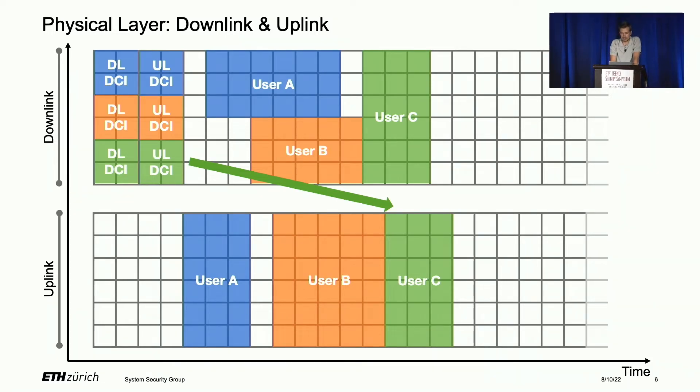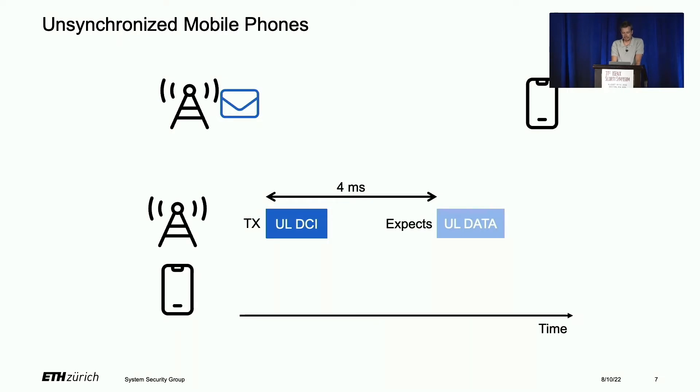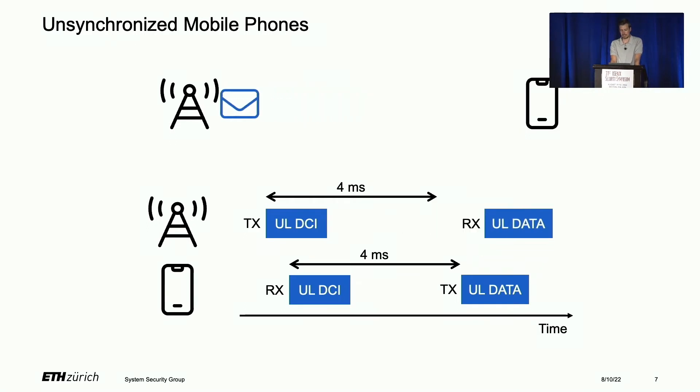Everything in LTE networks is tightly synchronized. What would happen if this was not the case? Imagine the base station sends an uplink DCI message and expects to receive uplink data exactly four milliseconds afterwards. However, due to propagation delay, this uplink DCI travels for some time, and the phone receives it with some delay delta. After four milliseconds, it sends the uplink data, which arrives at the base station again delayed by the propagation delay. Therefore, it arrives not at the expected time, but four milliseconds plus two times the propagation delay after the uplink DCI was sent.